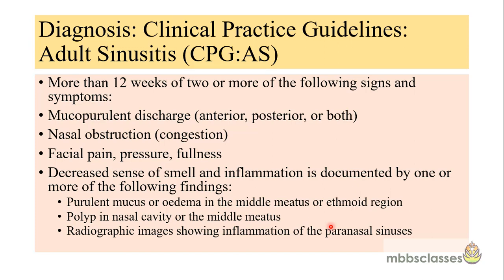As per the clinical practice guidelines for adult sinusitis, the diagnostic criteria require more than 12 weeks of sinus symptoms of two or more of the following: mucopurulent discharge (anterior, posterior, or both), nasal obstruction or congestion, facial pain or pressure or fullness, and decreased sense of smell. Inflammation must be documented by one or more of the following findings: purulent mucus or edema in the middle meatus or ethmoid region, polyp in the nasal cavity or middle meatus.